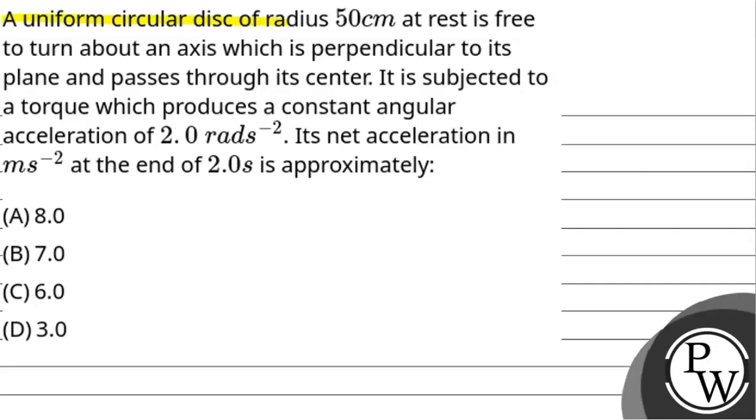A uniform circular disk of radius 50 cm at rest is free to turn about an axis which is perpendicular to its plane and passes through its center. It is subjected to torque which produces a constant angular acceleration of 2 radians per second square. Its net acceleration in meter per second square at the end of 2.0 seconds is approximately: